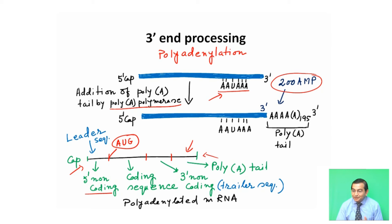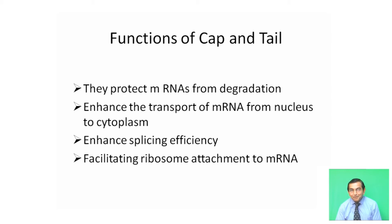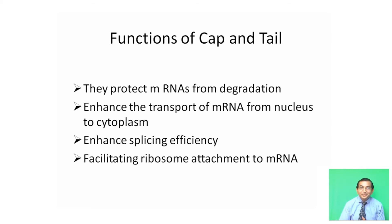The functions of the cap and poly-A tail include: protecting mRNAs from degradation; enhancing transport of mRNA from the nucleus to the cytoplasm; enhancing splicing efficiency; facilitating ribosome attachment to mRNA; and protecting mRNAs from attack by nucleases.